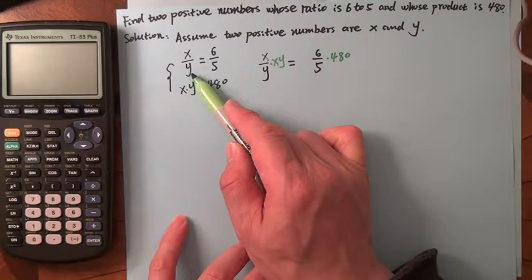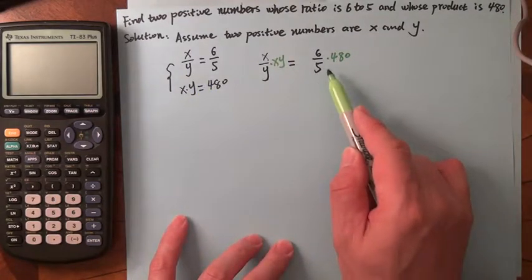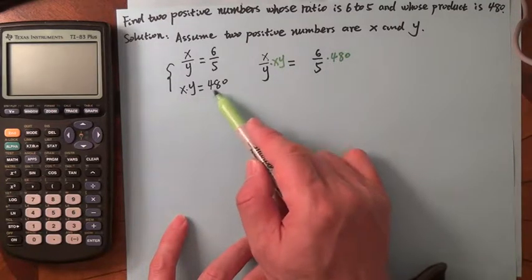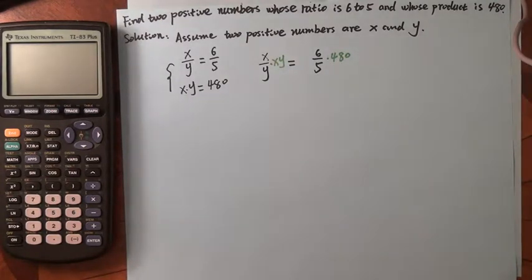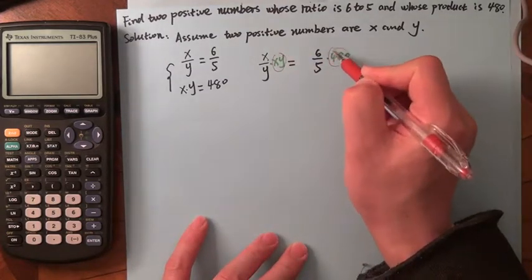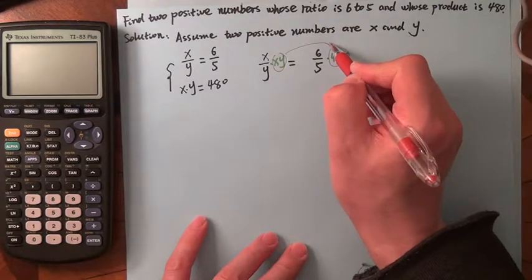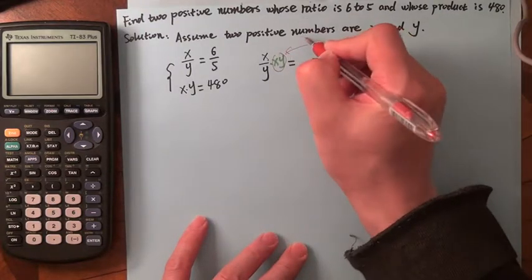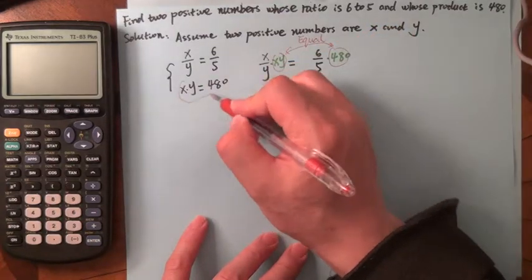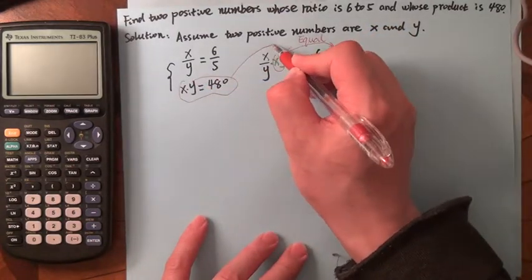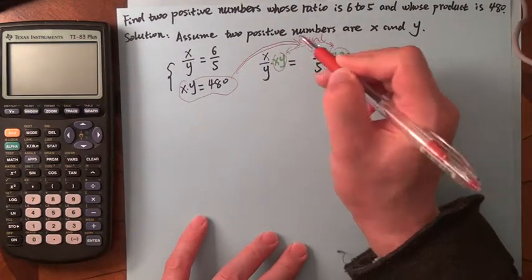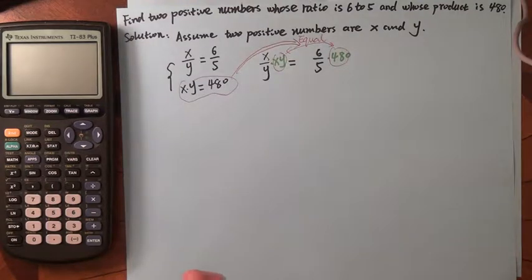Those two are equal. As long as you did that, you can see that Y will cancel this Y, and X will multiply by X, so you'll get X squared.